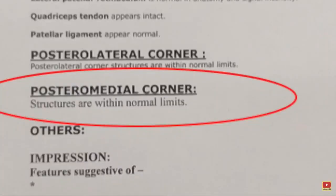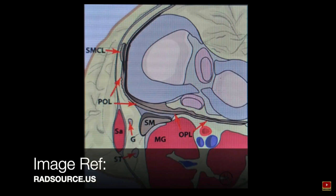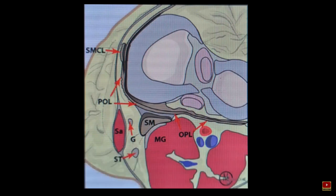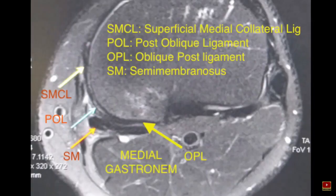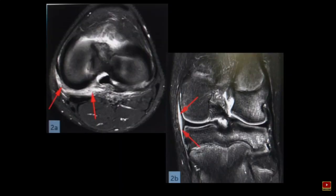Next in the format comes the posteromedial corner — a readily identifiable but very underappreciated area. If unidentified, it results in anteromedial rotational instability. The main structures we assess are the semimembranosus tendon, oblique popliteal ligament, posterior oblique ligament, posterior horn of the medial meniscus, and the medial collateral ligament. Here is an example of injury with significant edema in the posterior medial joint capsule and significant fluid separating the superficial and deep fibers of the medial collateral ligament.